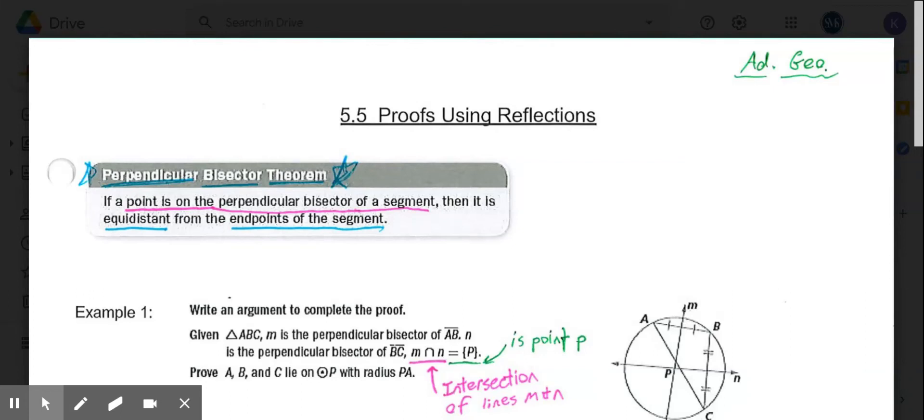Welcome to Lesson 5.5, Proofs Using Reflections. We've already gone through a couple lessons looking at some basic one-step proofs about congruence and some proofs using transitivity. Now we're building off of those ideas and getting into proofs using reflections.